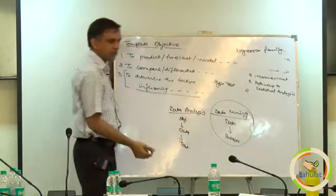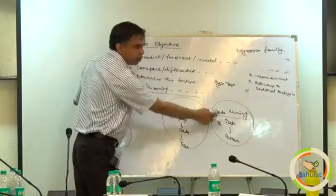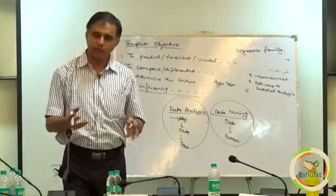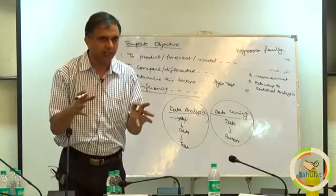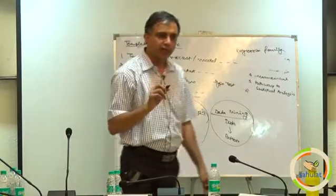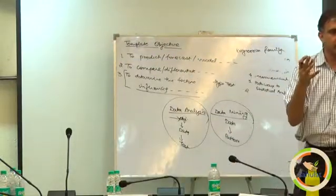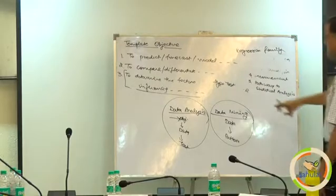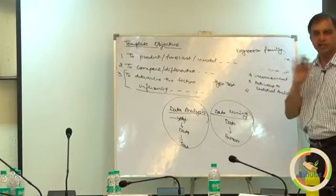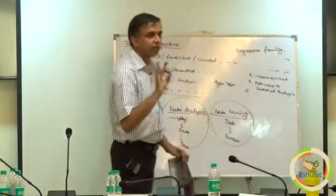This is one of the mistakes scholars do — they feel data mining is used in PhD, but it is always data analysis. You have an objective; in data mining you do not have any objective. Facebook has generated trillions of data and nobody has an idea what to do with it — there is no objective, we are just searching. That is what Twitter trends are — what is hot today, what are people talking about? That is data mining. It is a very big area, big data analysis, and it is going to stay for the next decade, but certainly not in PhD.